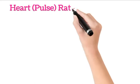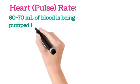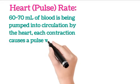Heart or pulse rate: When 60 to 70 ml of blood is being pumped into circulation by the heart, each contraction causes a pulse wave that travels along the arteries.